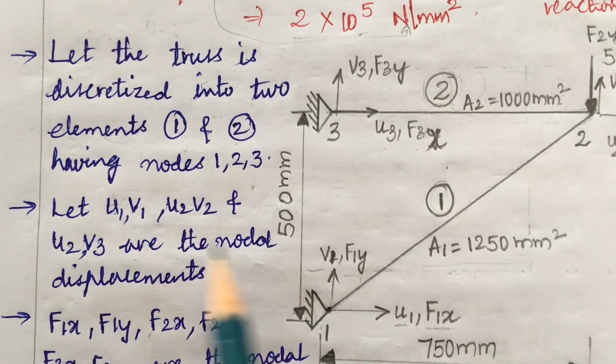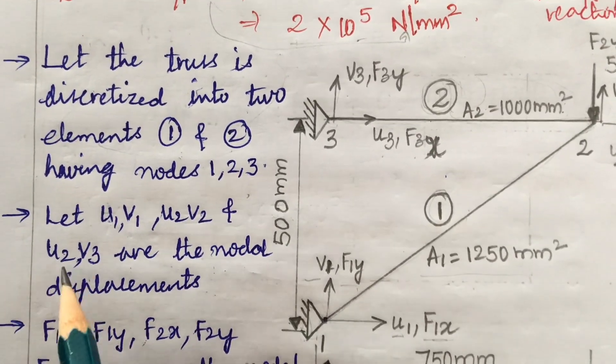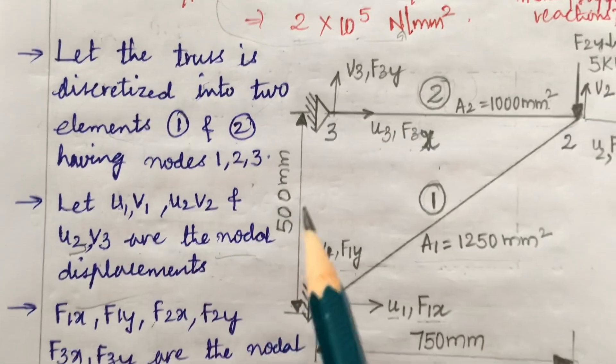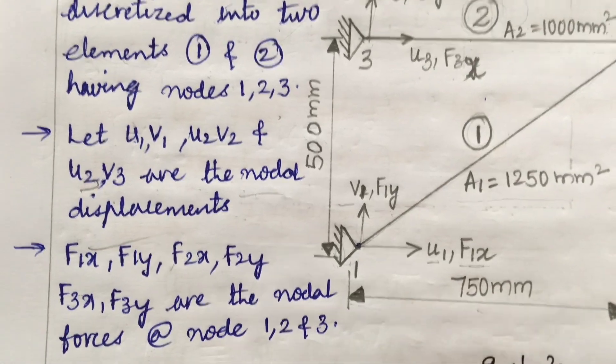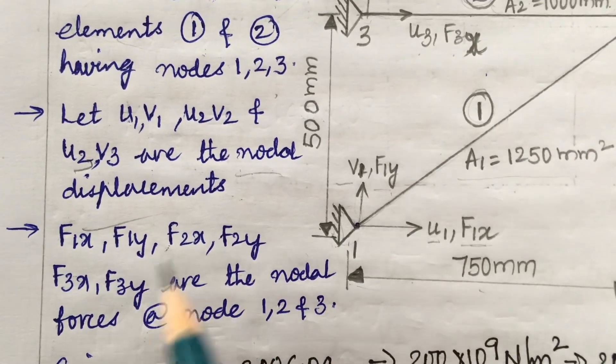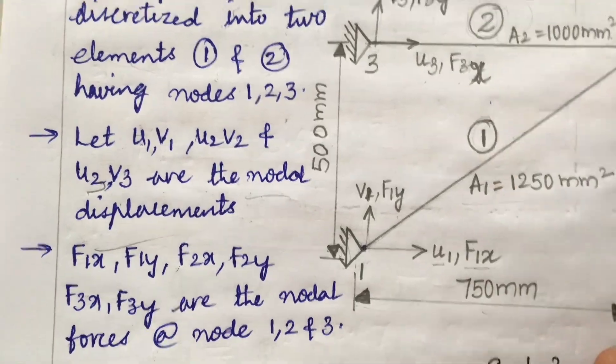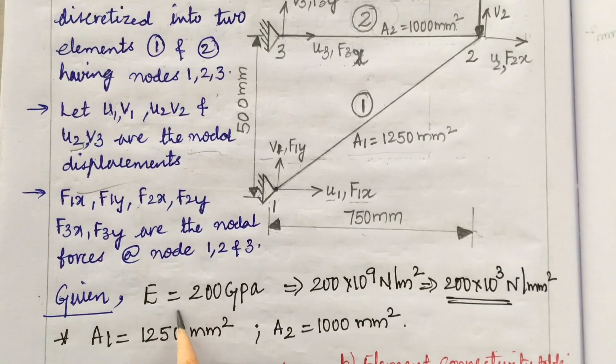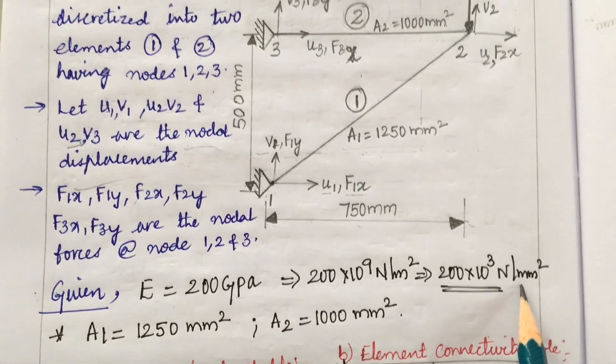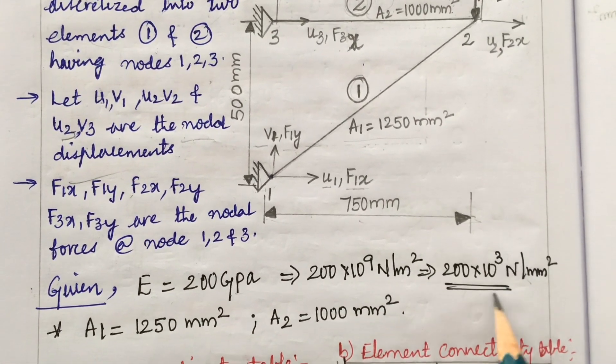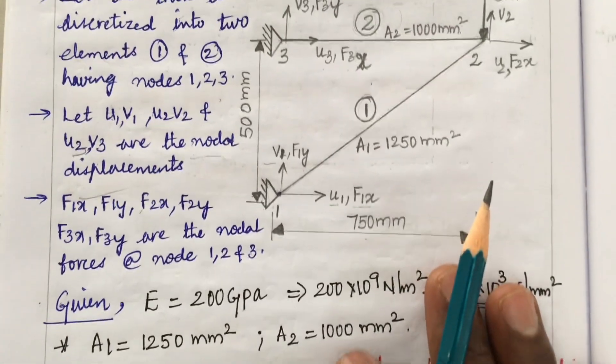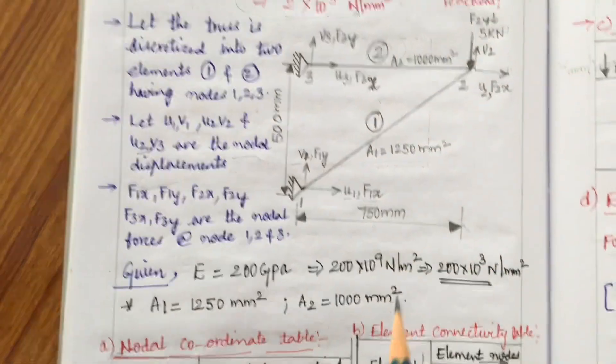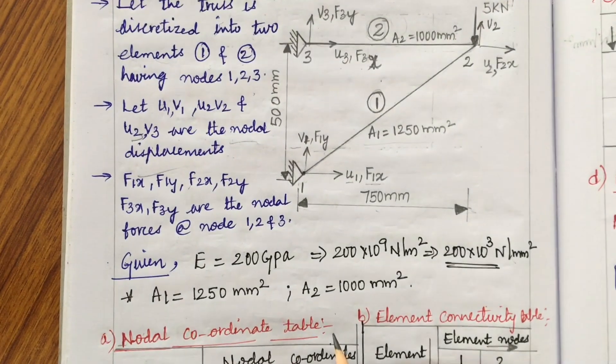This is element two. The element two connectivity is what? Two to three. This is third node. With respect to third node we have the displacements U3, V3 and the forces are F3x and F3y. The Young's modulus is given as 200 GPa, converted already for you as 2 × 10⁵ N/mm².